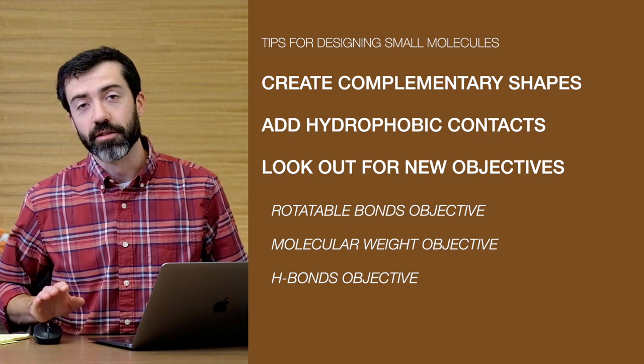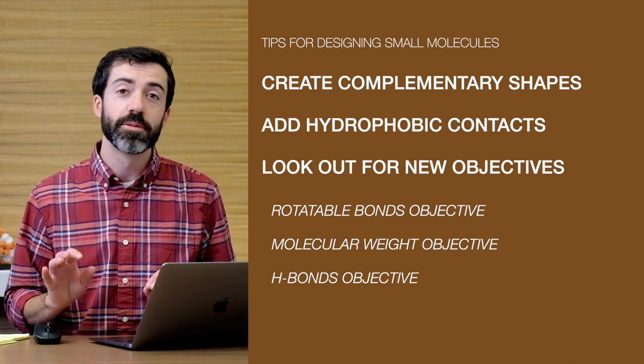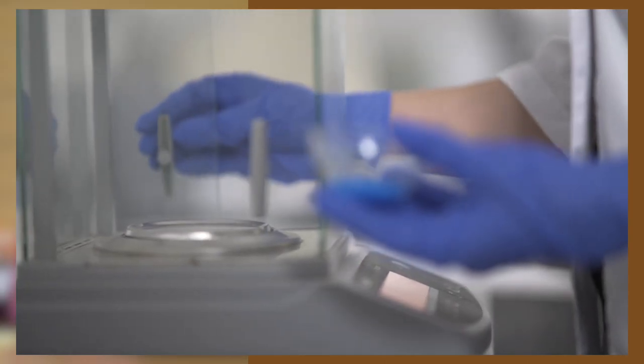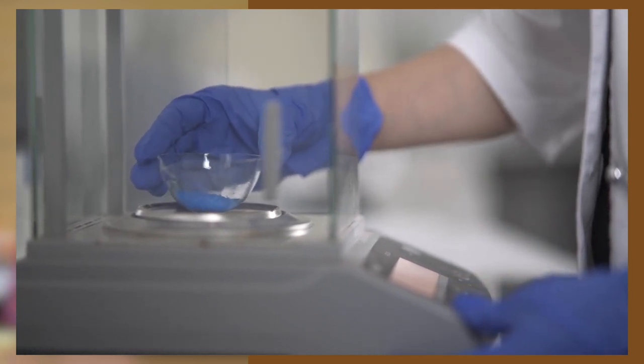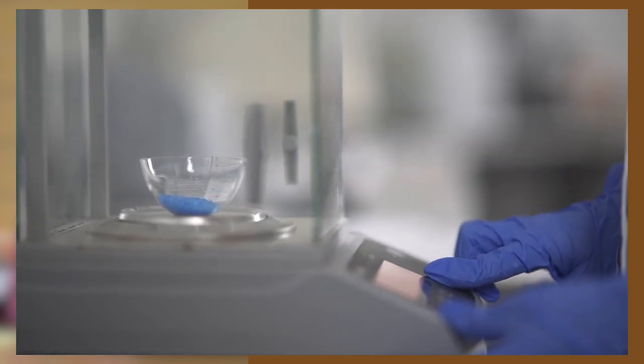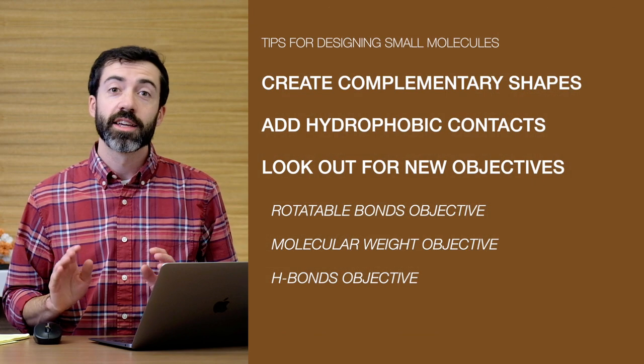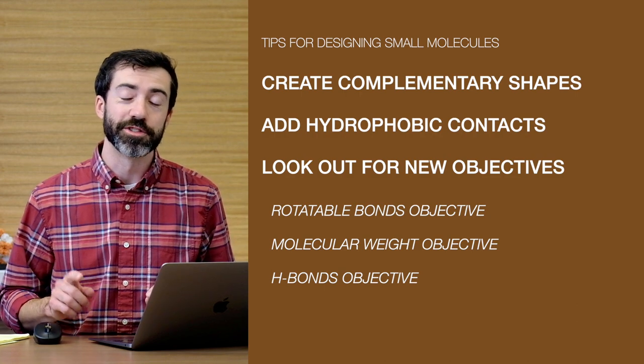The last objective we want to cover is called synthetic accessibility. This objective detects features in a small molecule that make it difficult to actually produce or synthesize in the lab. If your designed chemical violates the synthetic accessibility objective, we probably won't ever be able to study it in the lab. Keep an eye on this objective and you'll be able to design small molecules that are ready for testing. Different puzzles may have slightly different objectives — for a complete list, check the objectives panel at the top of the screen when you open the puzzle, or check the puzzle comments on the Foldit website.